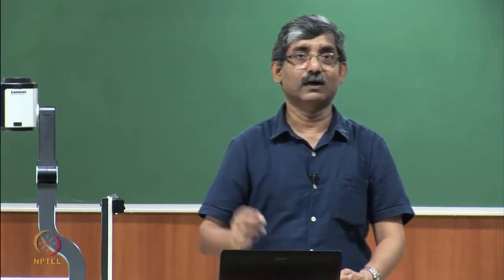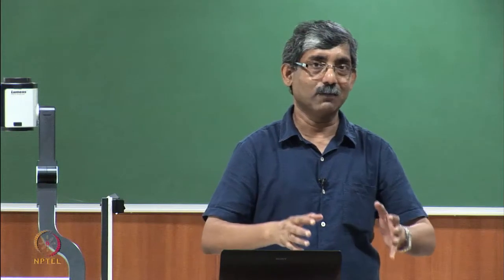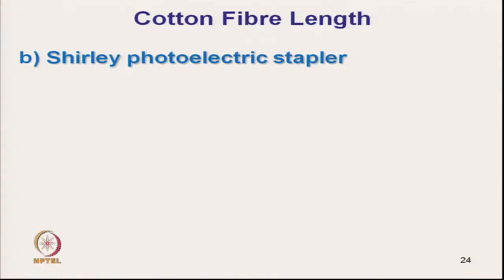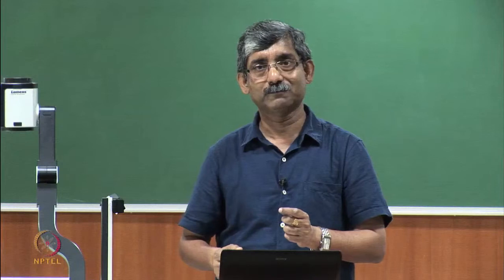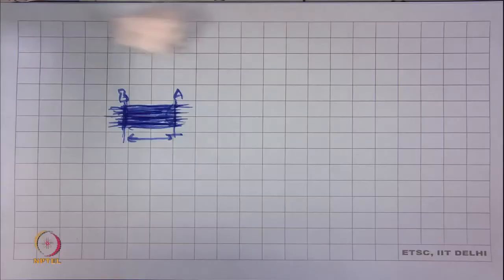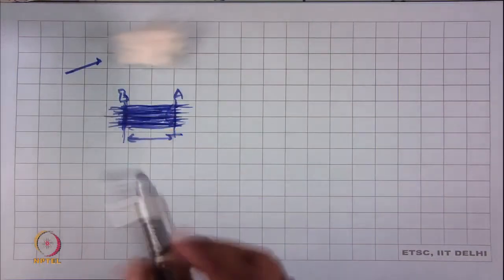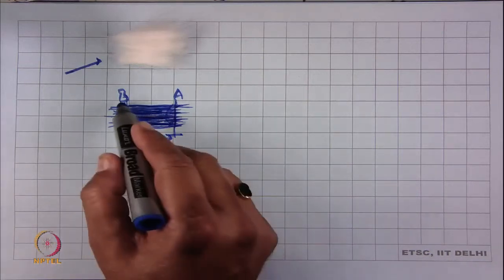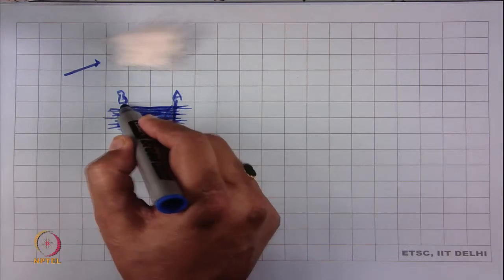Looking at the problem of hand stapling and judging, another instrument has been developed — a mechanized version of this hand stapling technique — known as the Surley photoelectric stapler. The principle is exactly the same: we can prepare the fibre tuft as before, but instead of the classer deciding the distance between lines A and B based on experience, we eliminate that subjectivity.